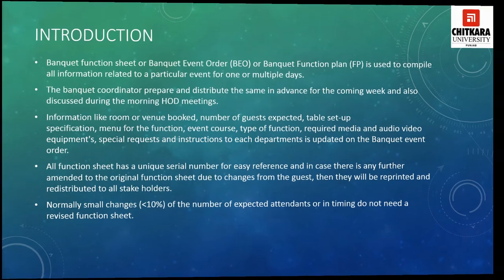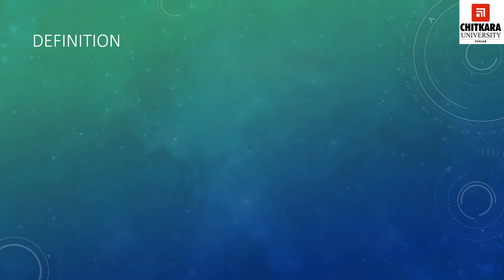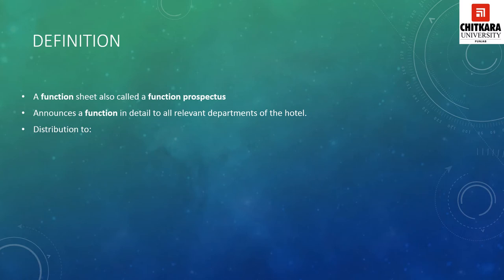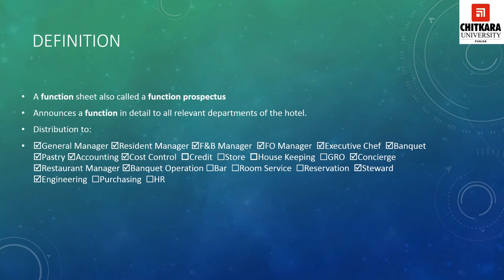When we talk about the definition of the Banquet Function Prospectus, a function sheet is also known as a function prospectus. It announces a function in detail to all the relevant departments of the hotel. Once the function prospectus is created, it is distributed to different departments so that everyone is aware of their role for that particular function.